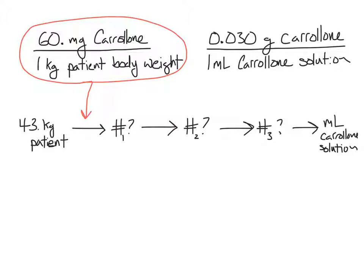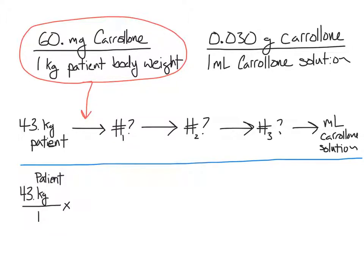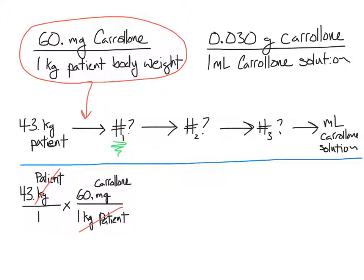Let's write out the actual problem. We start with 43 kilograms patient, and multiply by the dosage conversion factor: 60 milligrams carolone per kilogram patient body weight. Notice that if we multiply these two fractions together, our final answer would be in milligrams carolone. So unknown number one is in units of milligrams carolone.